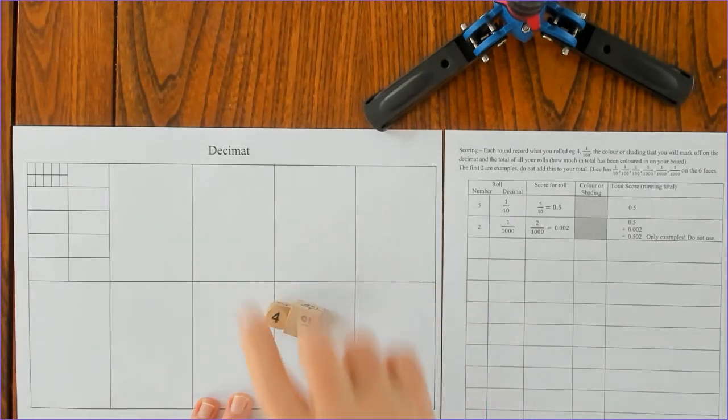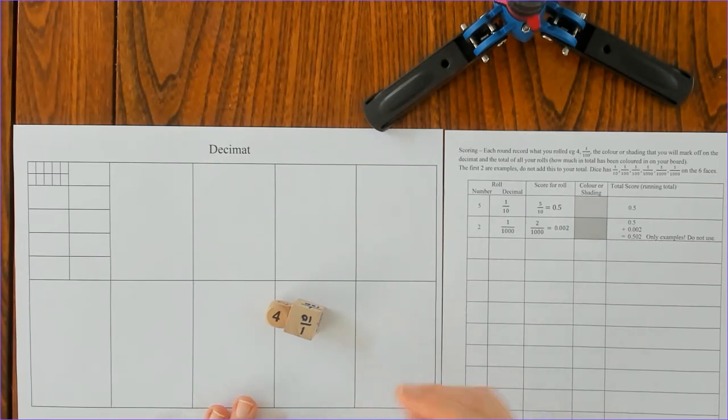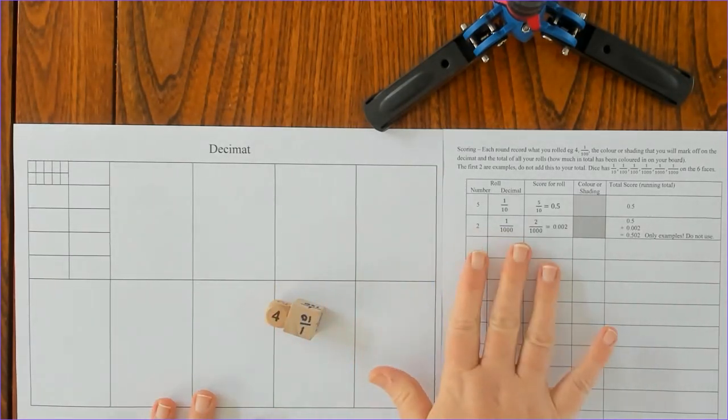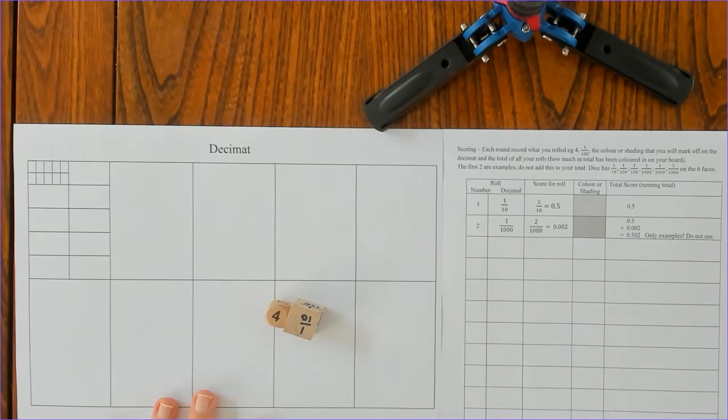That's all you need for the game. You're going to play against a partner or in groups of three. Each person has a board and a score sheet and you just take it in turns to roll the dice.